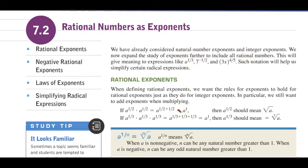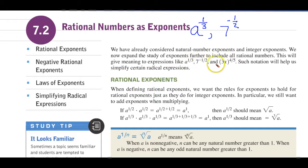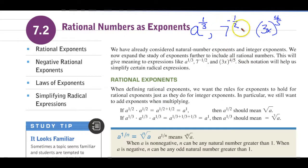I don't like the way they write these. I think they should write it as 'a to the one-third power,' '7 to the negative one-half power,' rather than do it this way. But that's an expedience of being able to type it. And this would be 3x to the four-fifths. Now, all of these are what we call fractional exponents, or rational exponents.